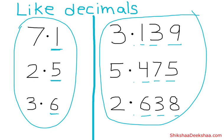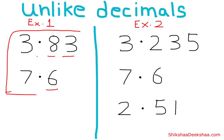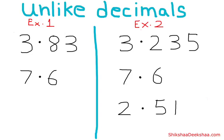If we have different number of decimal places, they are called unlike decimals. For example, one number has two decimal places and another has just one decimal place — that's why they are unlike decimals. In another example, the first number has three decimal places, the second has one, and the third has two decimal places, so these three are unlike decimals.